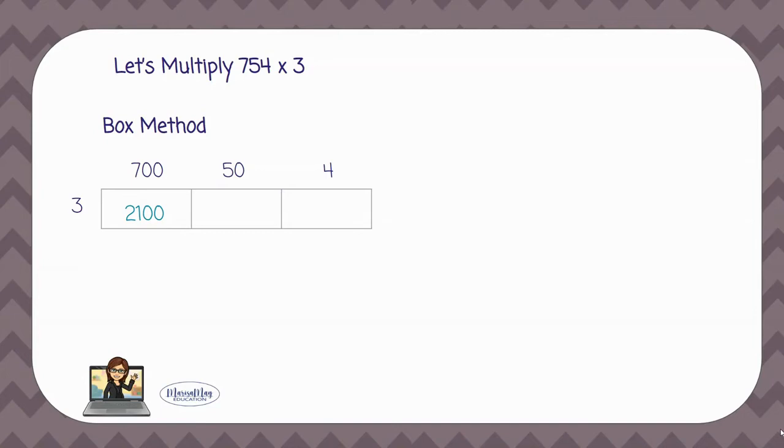Let's go to the next box. For this box I'm going to do 50 times 3. Again use the shortcut. 5 times 3 gives you 15 and add a zero on the end gives you 150.